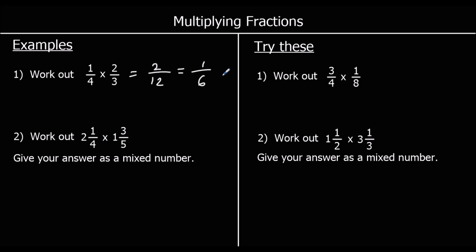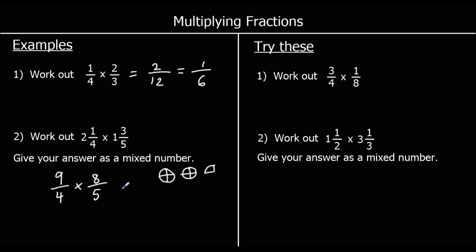Question two: work out two and one-quarter times three and one-fifth. To multiply mixed numbers, we need to change them to top-heavy fractions first. Two whole ones and one-quarter: two times four is eight quarters, plus the other quarter is nine quarters. And one whole and three-fifths: one times five is five-fifths, plus three is eight-fifths. So two and one-quarter is nine-quarters, and one and three-fifths is eight-fifths.